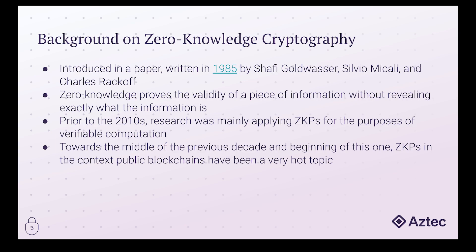Initially after the publication of the research paper and up until the 2010s, a lot of the interest in zero-knowledge cryptography was tailored towards verifiable computation — the idea of offloading a computational process to another party who submits the result back along with a proof that the computation was carried out correctly. But with the advent of public blockchains in the 2010s, there are many use cases ideal for zero-knowledge proofs given the decentralized nature. There are many ways that zero-knowledge proofs can enable privacy on top of blockchains and also scalability, and we'll touch on these concepts later in the video.